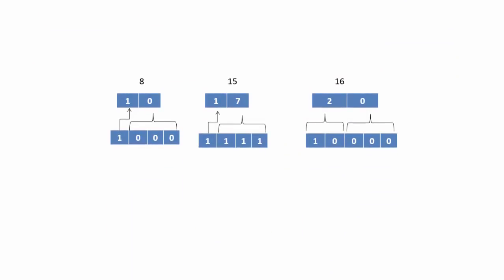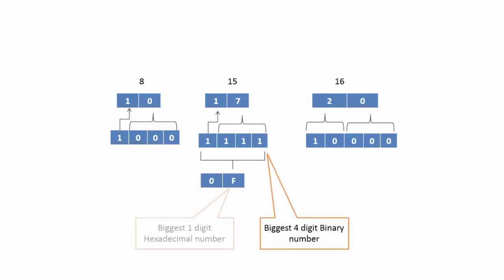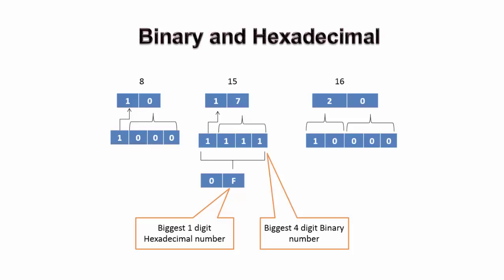Let us see one more example. We have seen how clubbing three binary digits together makes it easy to read in octal. What if we club four digits? The biggest four digit binary number is equal to biggest one digit hexadecimal number. So basically hexadecimal number system also makes it easy for programmer to read and write a binary number.